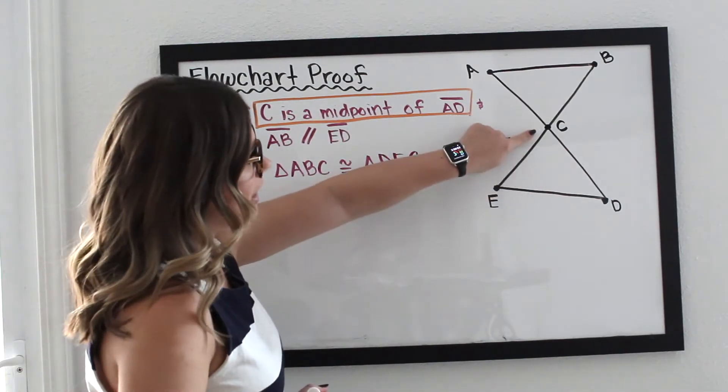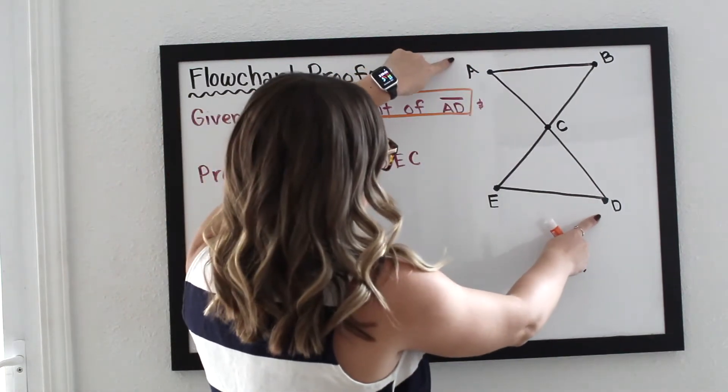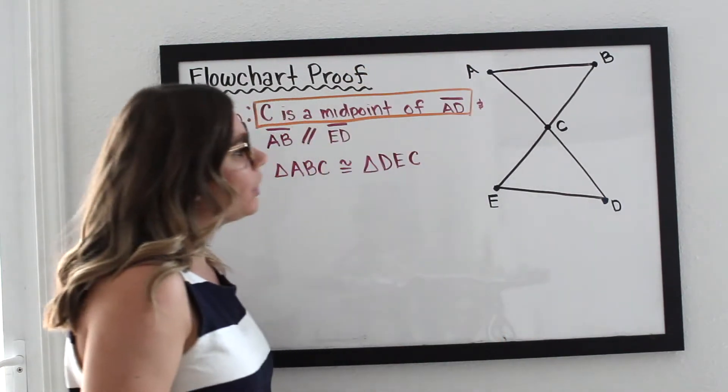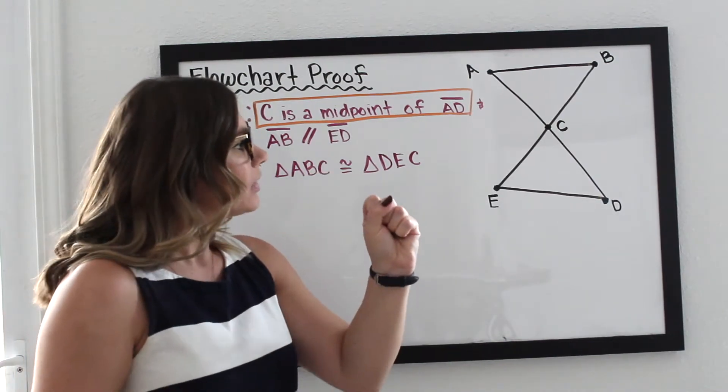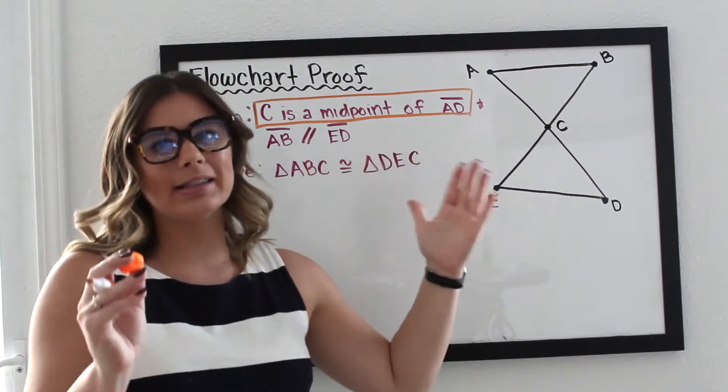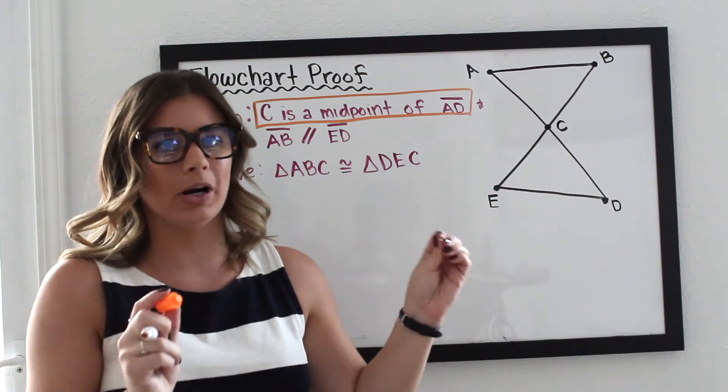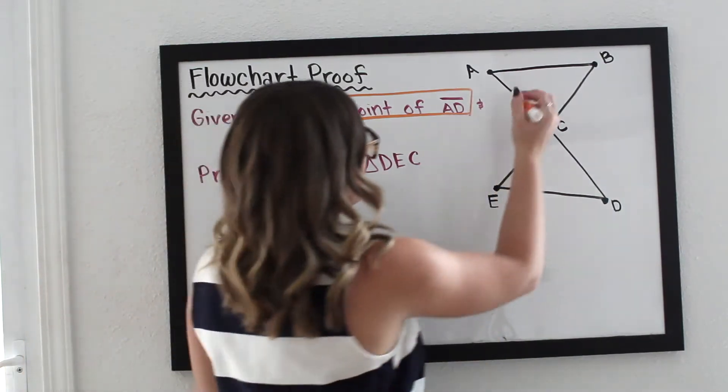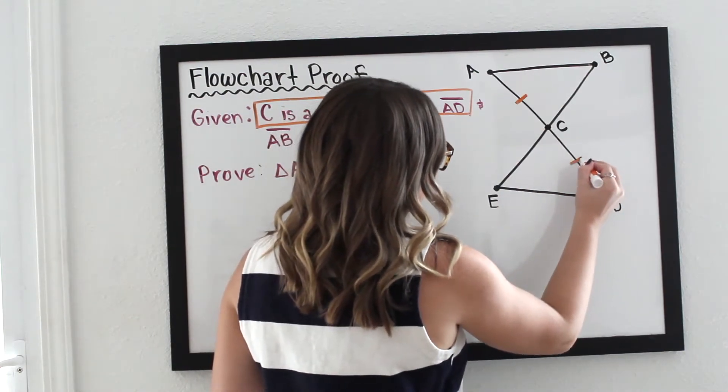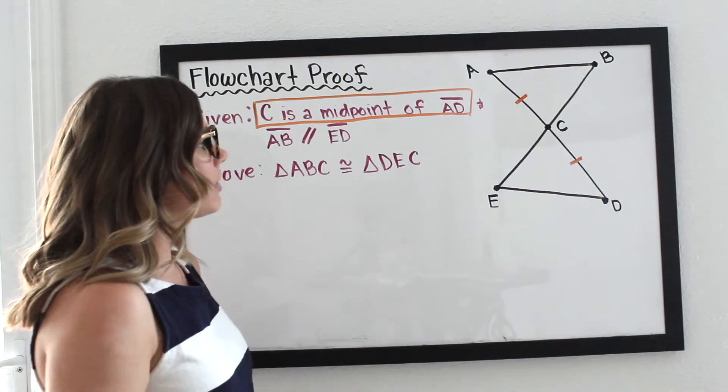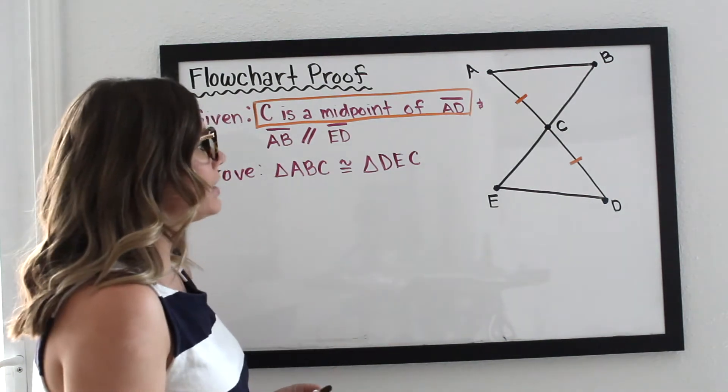Well, this is point C and it's a midpoint of AD. Well, when you have a midpoint, it means that that point is basically cutting your line segment into two equal parts. So it would mean that actually AC is congruent to DC, and so I'm going to just mark that there on my diagram.